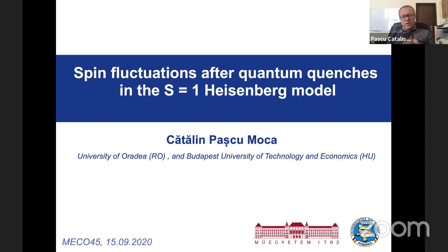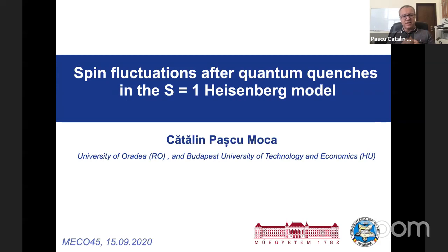This work was done in collaboration with three people from the University of Budapest. One is Gergai Zorand, and the other one is Kormosz Marton, who is working at the Wigner Institute. And the last one is Miklos Werner, who was a PhD student at that time and did most of the numerical calculations.